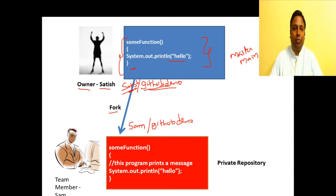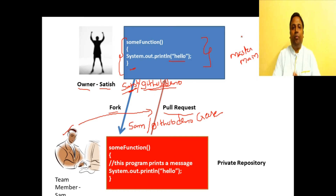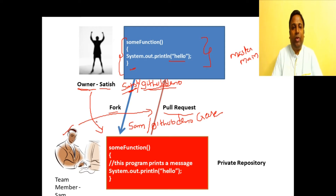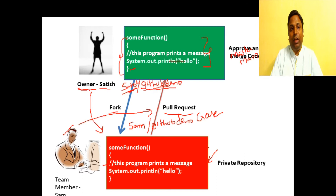To merge Sam's changes into the main repository, Sam creates a pull request — proposing the changes to be moved from his repository to the master. When he creates the pull request, the owner Satish gets notified. Satish can review all the changes Sam is proposing. If satisfied, he approves and then merges the changes into the master repository.